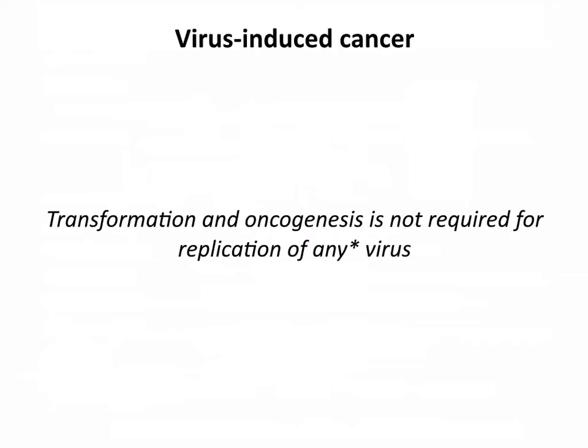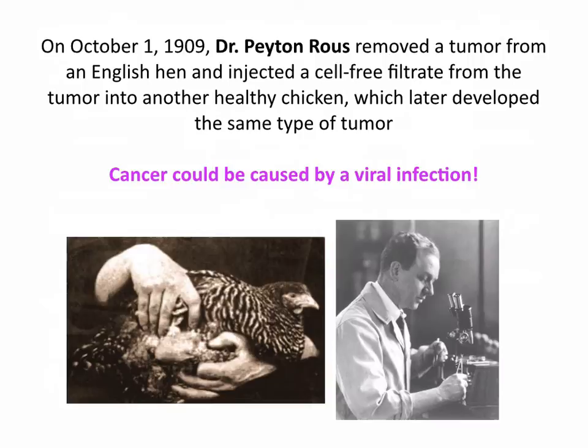I have an asterisk here because for years I've made the statement that transformation isn't required for viral replication. Someone emailed me about a virus that causes tumors of fish, where it seems that the tumor is actually important for spreading the virus. So there is some evidence that perhaps for that one retrovirus of fish it's needed for replication. But for all the others — certainly the ones we'll talk about today — making a transformed cell or a tumor is absolutely not needed for the virus to replicate.